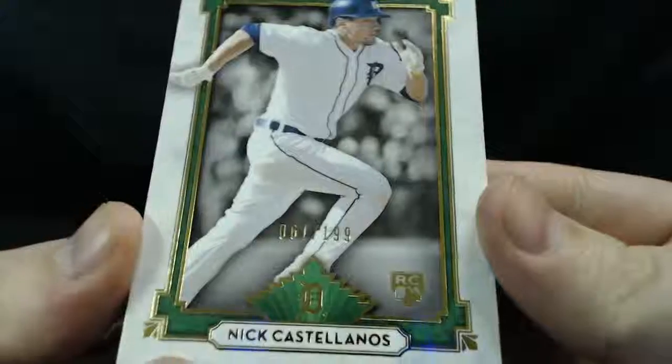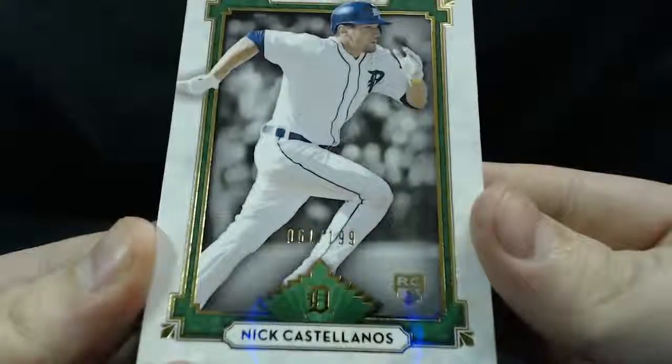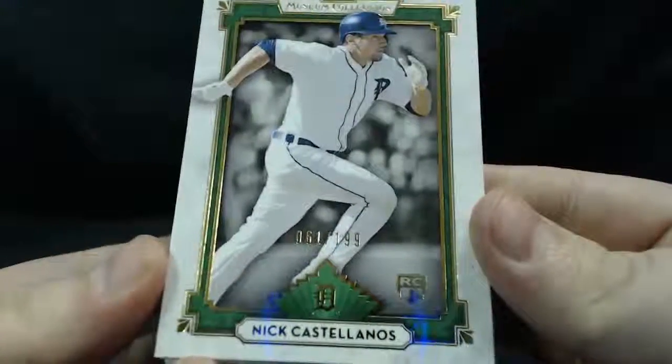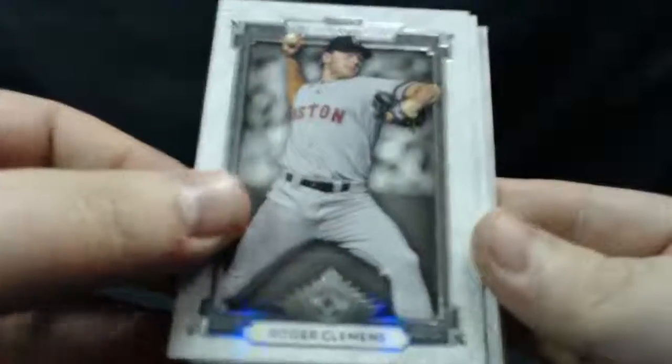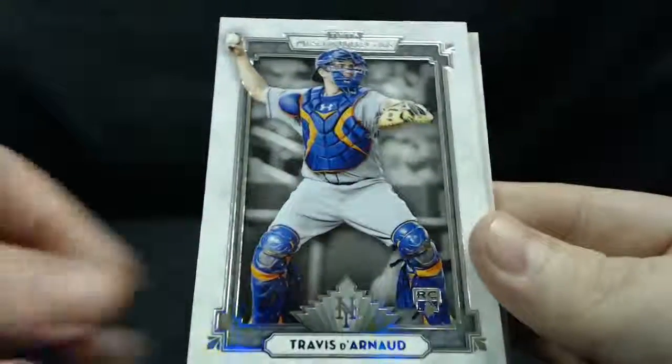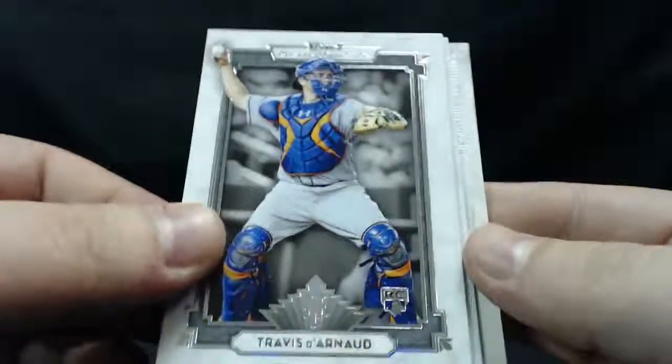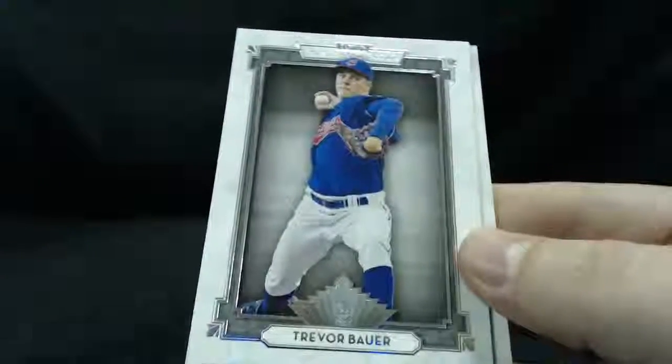And last pack, guys. Good luck. Another rookie card. Nick Castellanos. Rookie card. 61 of 199 for the Tigers. We have Roger Clemens for the Red Sox. Travis Darnot. Rookie card for the Mets. Trevor Bauer.